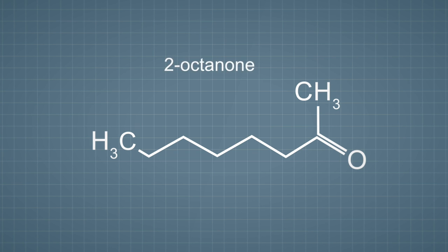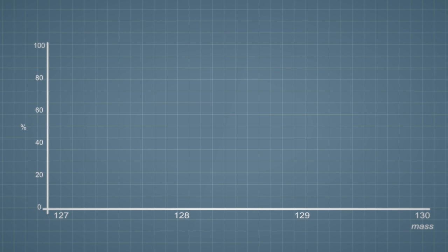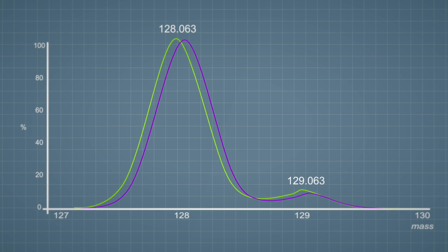For example, on a low resolution instrument, 2-octanone and naphthalene would essentially appear to be identical because the mass difference is less than 60 millidaltons. However, as the resolution is increased, the peaks can be resolved from each other and the accurate mass of each peak can be measured.